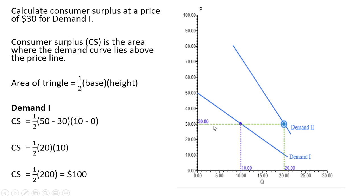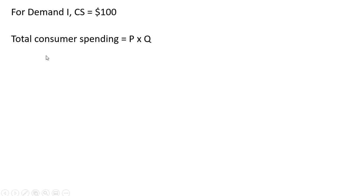Consumer surplus here for Demand Curve 1 is going to be $100. We'll notice that total consumer spending here is going to be just the price times the quantity purchased. With Demand Curve 1, the price was $30, and consumers bought 10 units, so they spent $300.